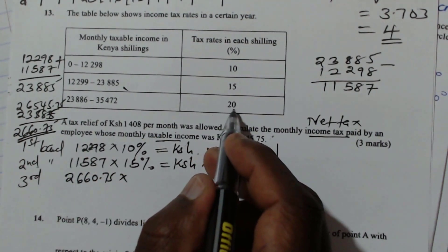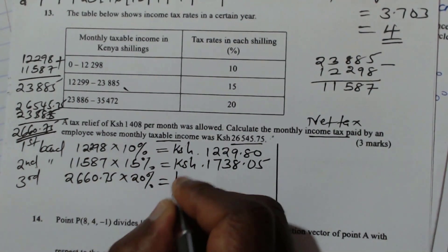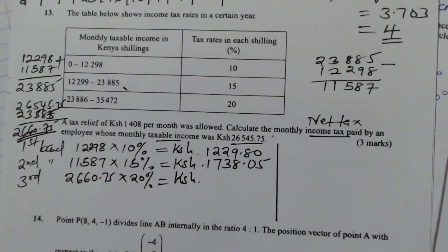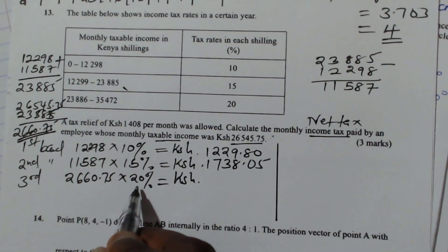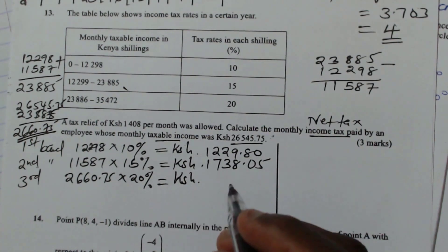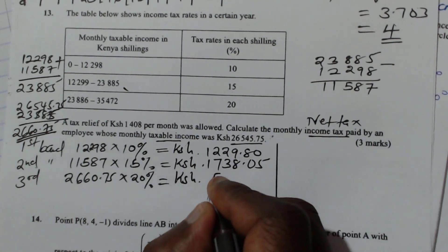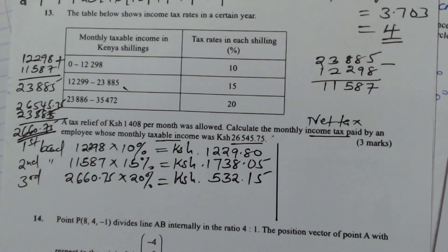So we multiply by the rate in that band, which is 20%. And this one will give 532.15. So now we have taxed everything.